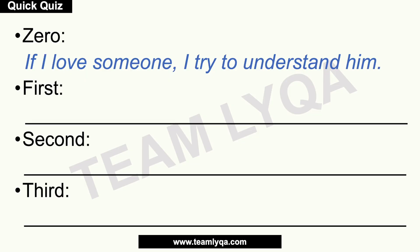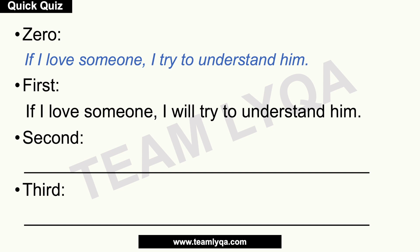Alright, let's see how you did. The statement is zero conditional: 'If I love someone, I try to understand him.' That's a statement of fact — at least for the speaker. For first conditional, you'd say: 'If I love someone, I will try to understand him.' You still have present simple in the first part, but you add 'will' in the result clause.